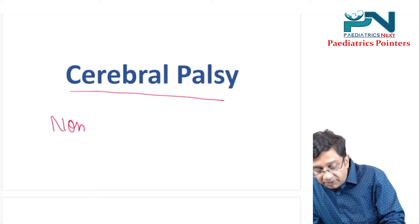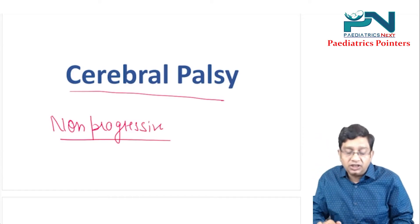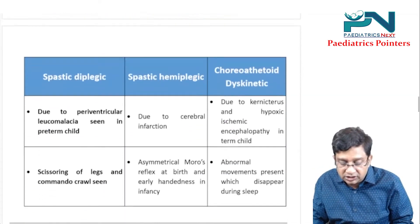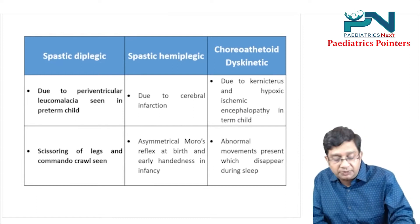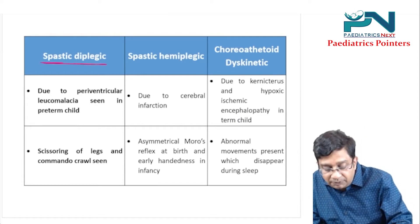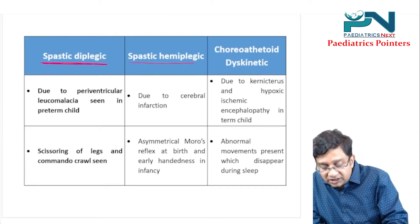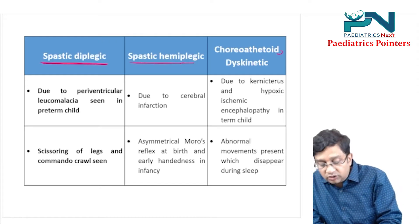The first thing you should always remember about cerebral palsy is that it is non-progressive. Broadly speaking, questions come on three types: spastic diplegic type, spastic hemiplegic type, and choreoathetoid type.